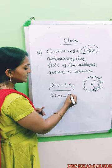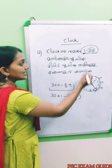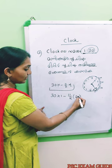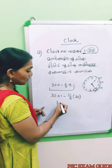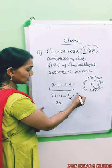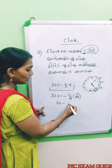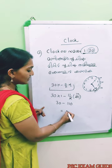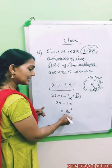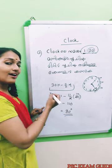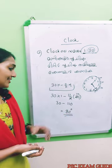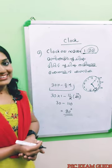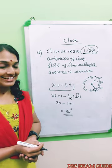The type of questions in the clock uses the formula 30H minus 11 by 2M. If we apply this to the question, we can answer it. This is a constant value.